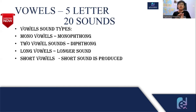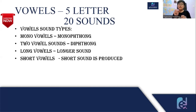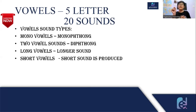Let's take an example: the word 'pot.' When we say 'pot,' it is produced for a shorter duration — pot, pot, pot. We only take a little time to produce this sound. On the other hand, take the example of 'peel.' We don't say 'pill it off,' we say 'peel it off.' Here we take a longer duration to produce the word 'peel.' So this is the longer vowel.